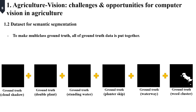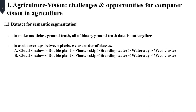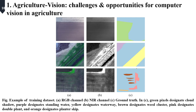To make multi-class ground truth, all of the ground truth data is put together. Also, to avoid overlap between the pixels, we used two types of ordering of classes. This is an example of ground truth for multi-class semantic segmentation.